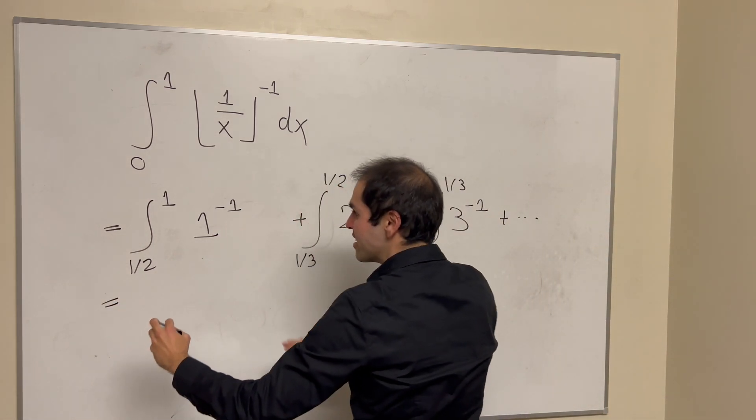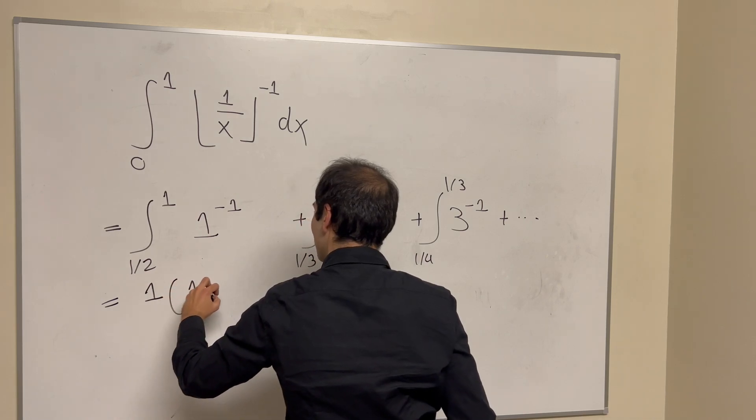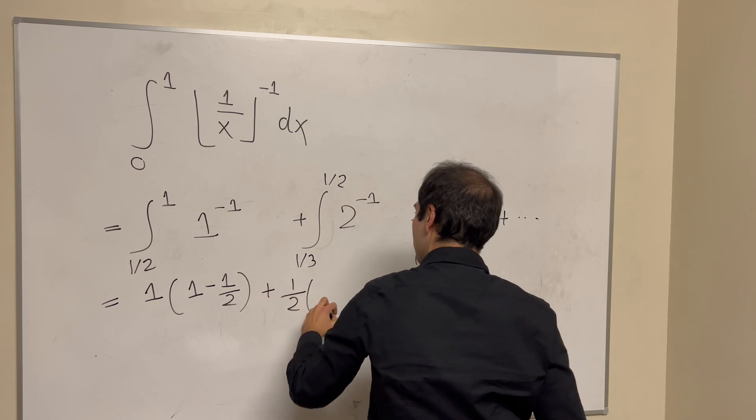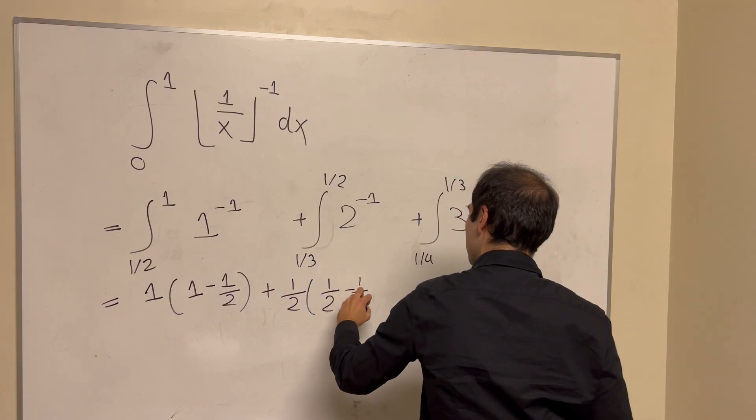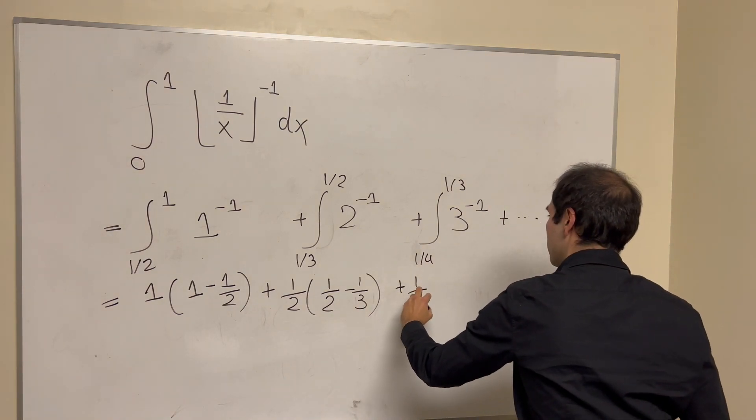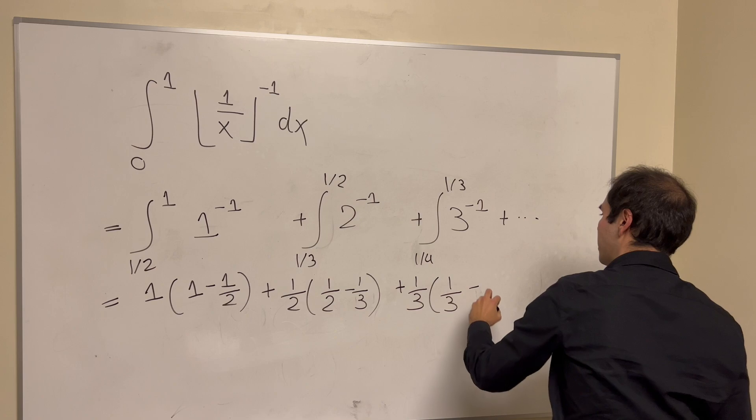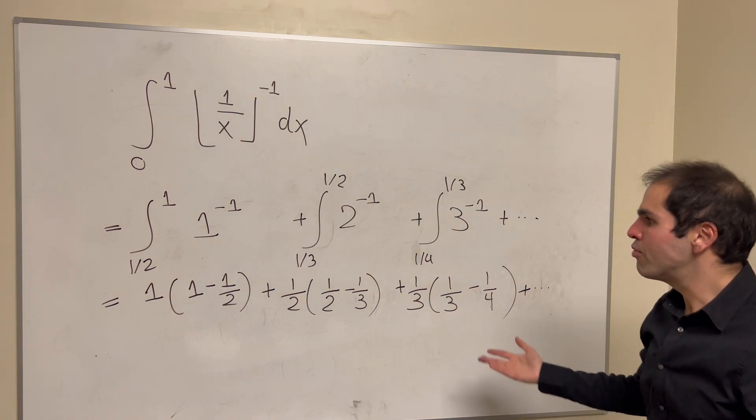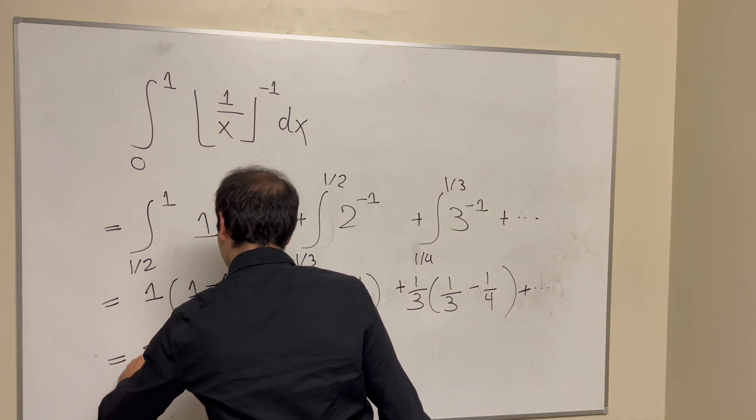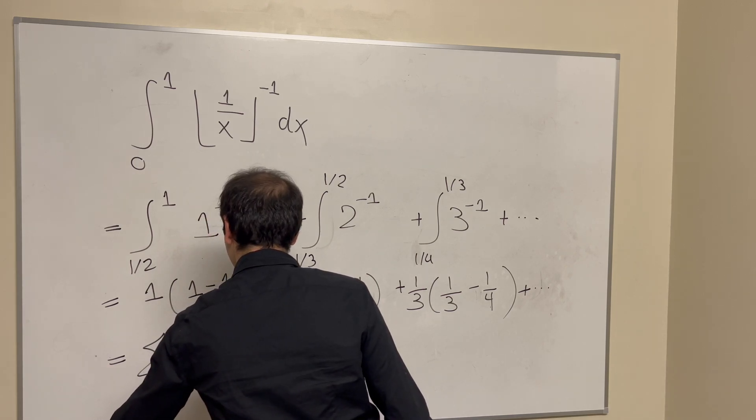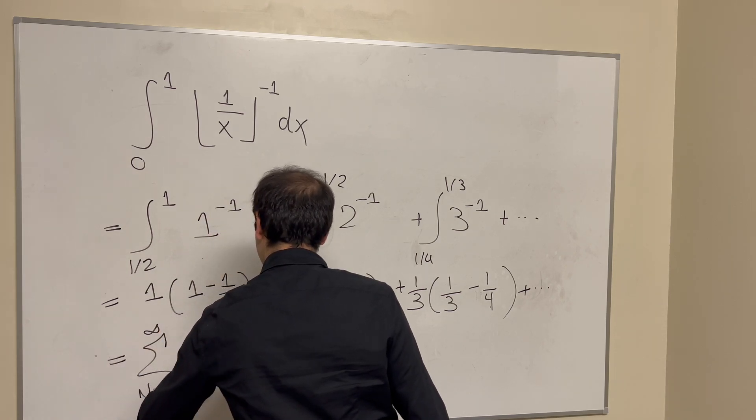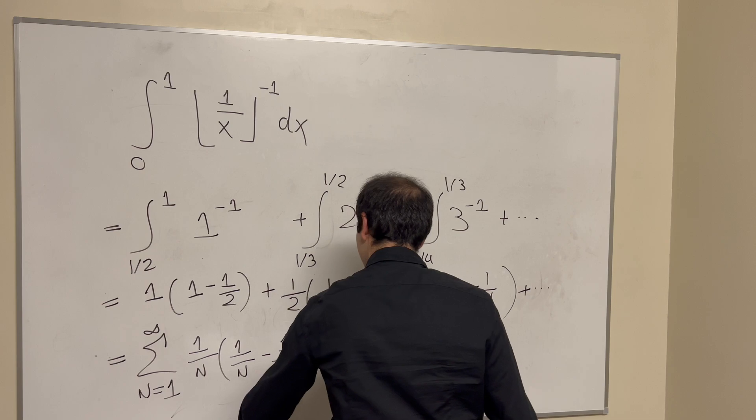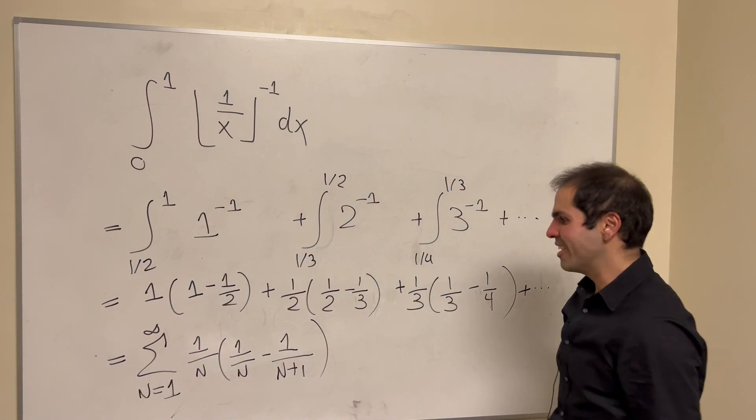And this is just a constant, so it's just 1 times 1 minus 1 half plus 2, so plus 1 half times 1 half minus 1 third plus 1 third times 1 third minus 1 quarter, etc. So you can really write this if you wish as the sum from n equals 1 to infinity of 1 over n times 1 over n plus 1. You'll see why this is useful.